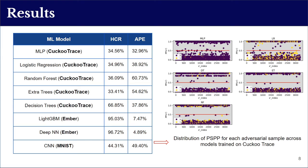The figure represents the distribution of the perturbation precision of each adversarial input, represented by its index, across all models trained on Cuckoo Trace. We focus on the evasive samples that are misclassified by the machine learning model — presented in purple. For all five models, we observe a high number of purple points below the red line, meaning more than half of the perturbed features in each of these samples are not correlated with the misclassification result.